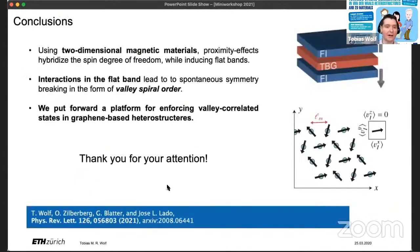So with this, I reached my conclusion slide. I want to once more repeat the key message, namely that we can use proximity to magnetic materials to enforce valley correlations in twisted bilayer graphene. And with that, I thank you for your attention and I'm looking forward to your questions.